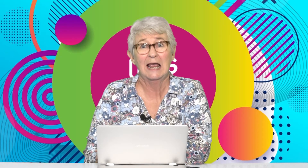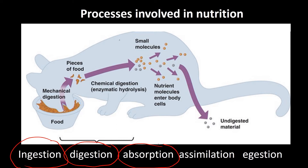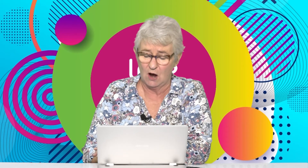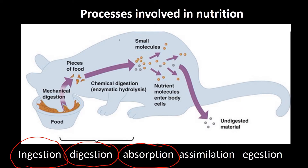Once the smaller pieces have been broken down, they have to be absorbed into the blood so that they can go to different parts of the body. Then, once they're at different parts of the body, they need to go into the cells so they can play a role in growth, and that is called assimilation — when the food that was on your plate actually becomes part of the cells in your body.